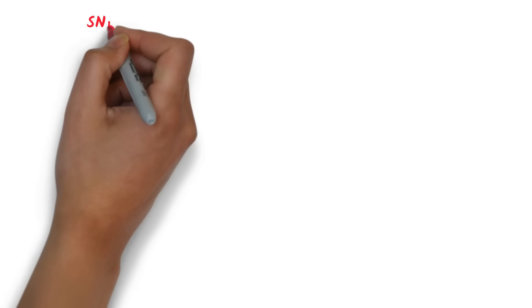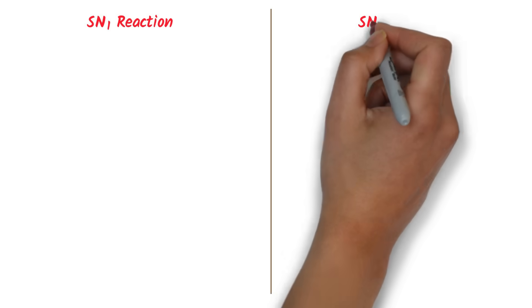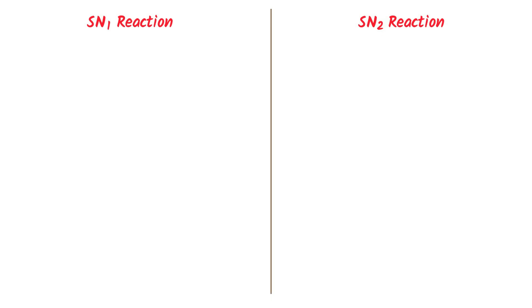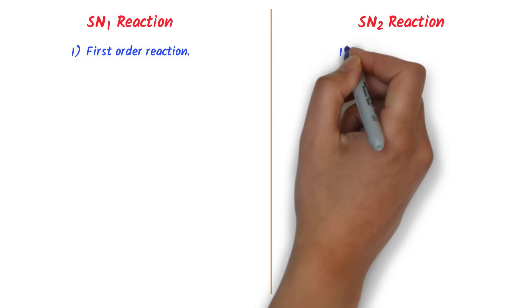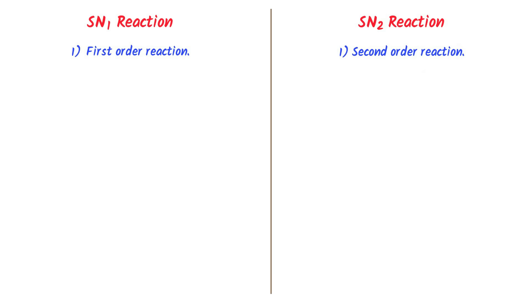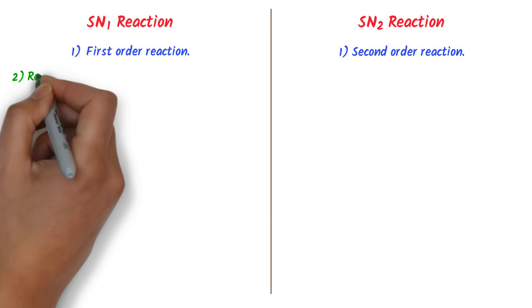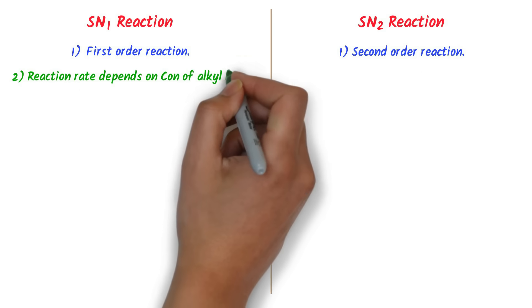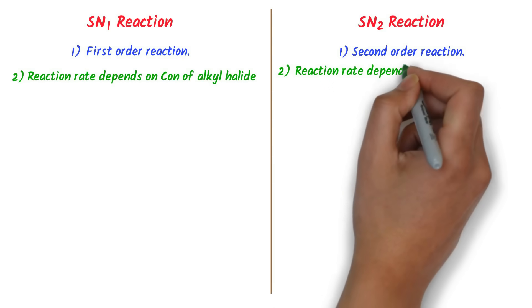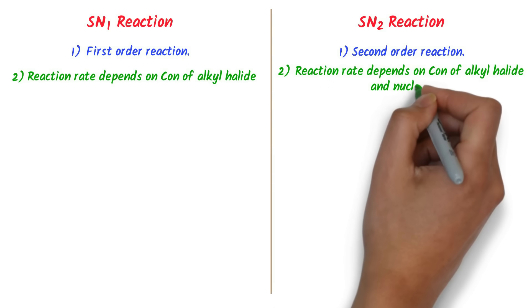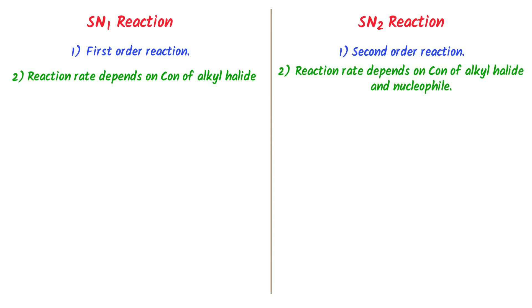Finally, let me teach you the differences between SN1 and SN2 reaction. SN1 is a first-order reaction, and SN2 is a second-order reaction. SN1 is first-order because the rate of reaction only depends on the concentration of alkyl halide. While SN2 is second-order because the rate of reaction depends on both the concentration of alkyl halide and the concentration of the nucleophile.